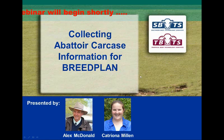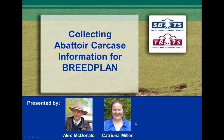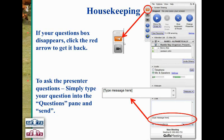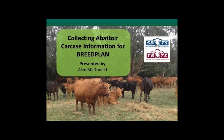Presented by Alex Macdonald. Before we start, some housekeeping: if your questions box disappears, click the red arrow to get it back. To ask questions, type into the questions pane and press send. Alex will stop a couple of times to take questions. If you're having audio problems, call in using your telephone, switch audio from mic and speaker to telephone, and dial in using the number provided. With that, I'll hand over to Alex.